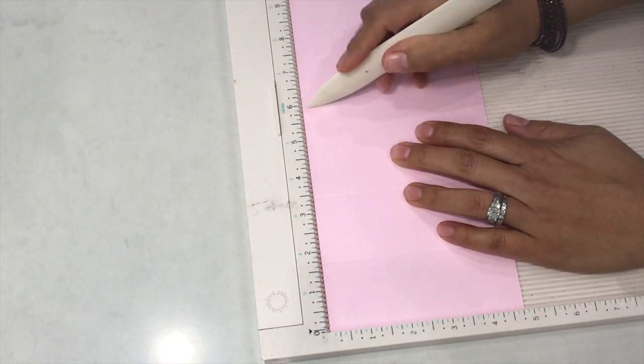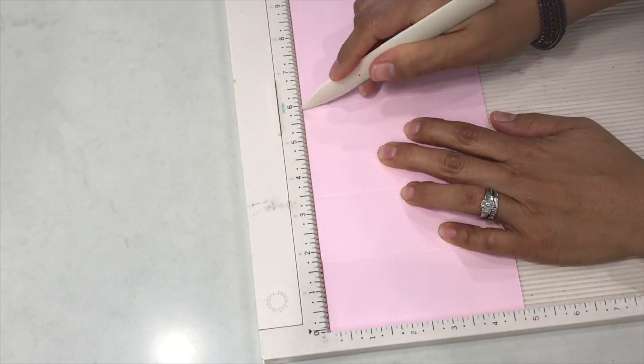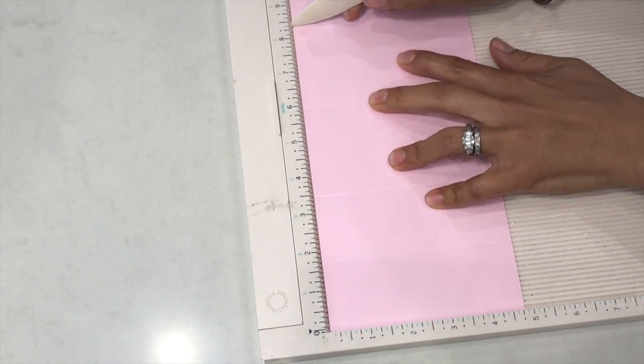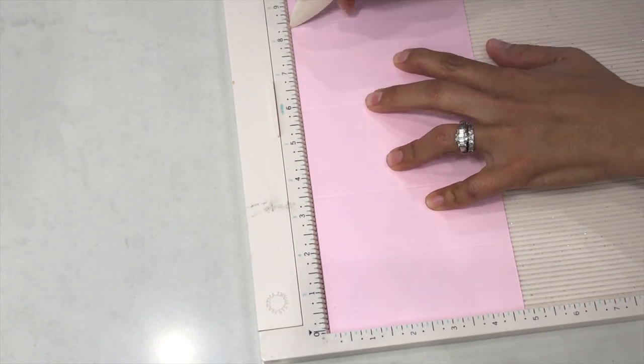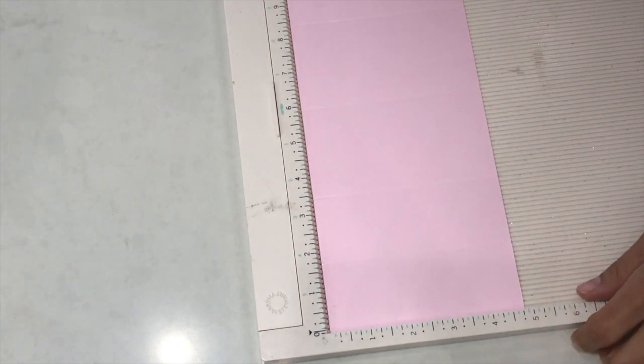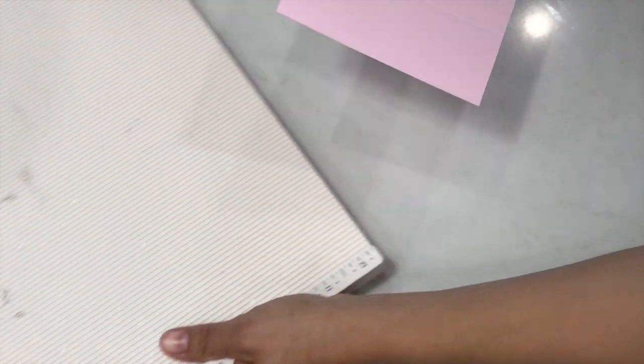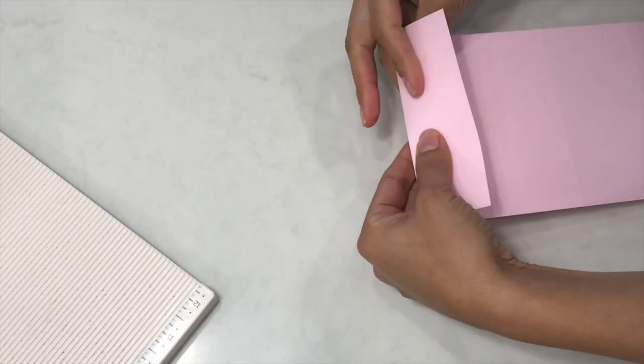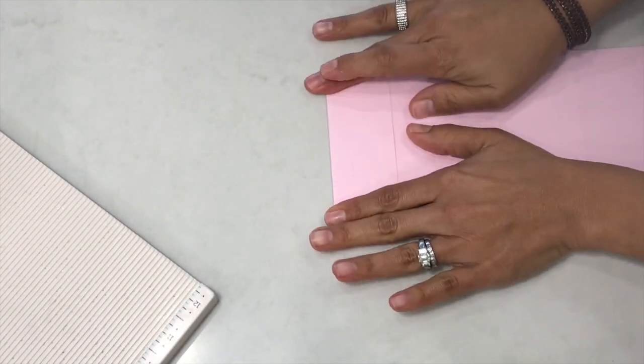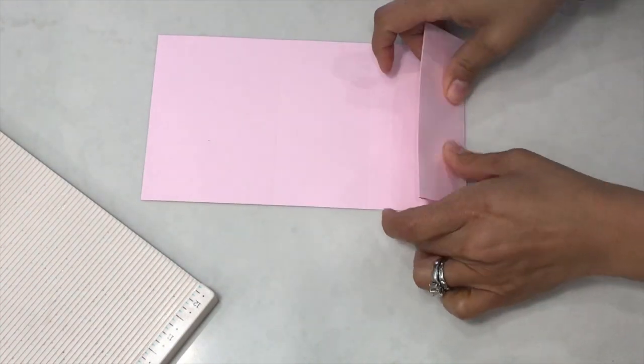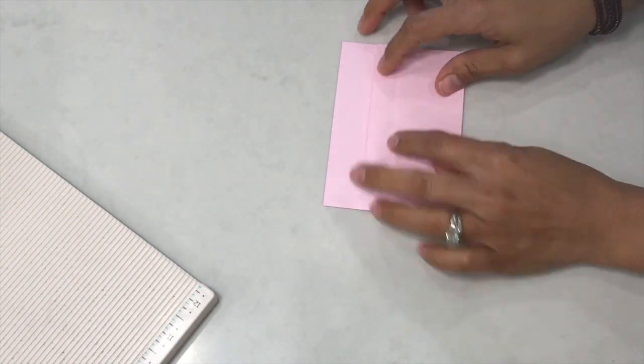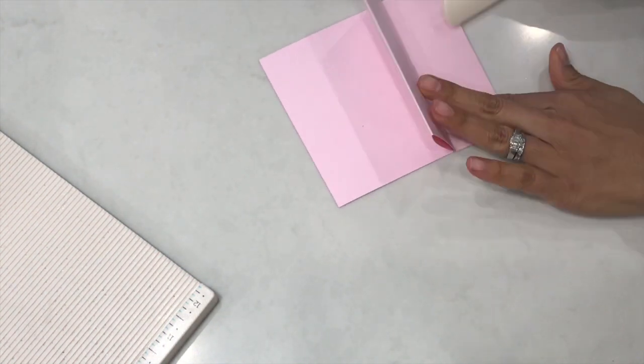Then you're going to score at 6 inches and again at 8 1/2 inches. Then we're going to move this out of the way and go ahead and make our folds.